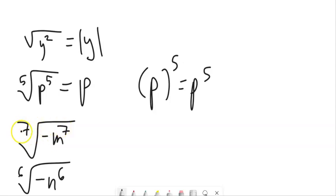Fifth root and fifth power undo each other. Just here, seventh root and seventh power, this is odd. So they undo each other. It gives me a negative m.